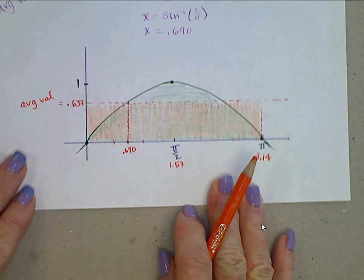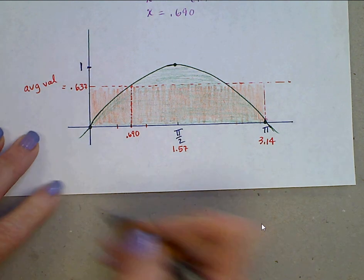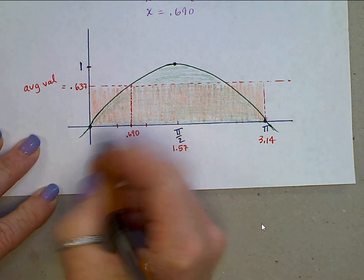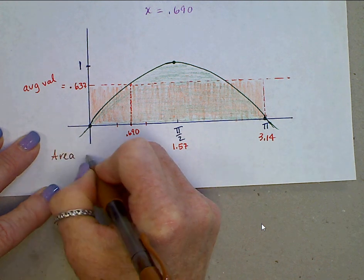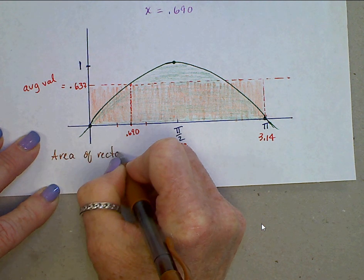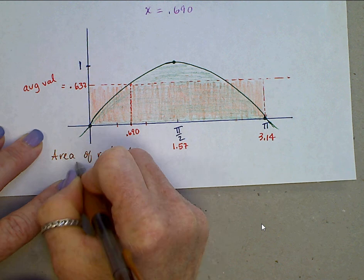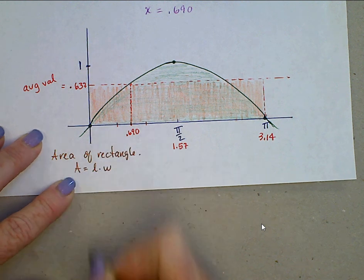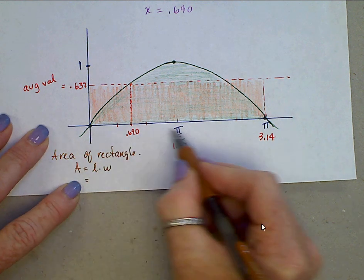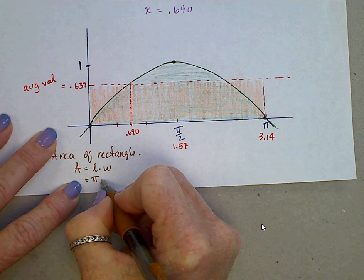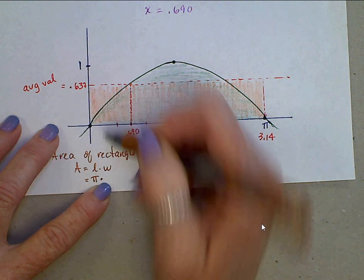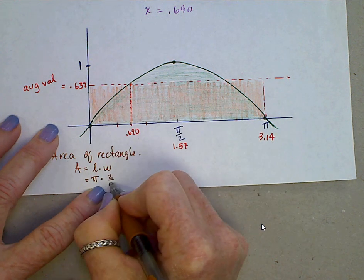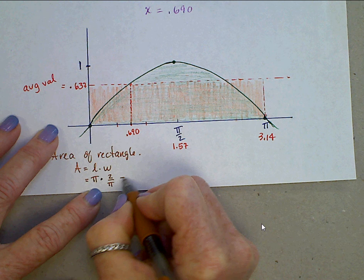Let's just kind of go back and confirm a few more things here. So there's your diagram, but looking at this rectangle, area is length times width. How long is this? That's pi, or base times height, times its height. This was 2 over pi, and that area is 2.